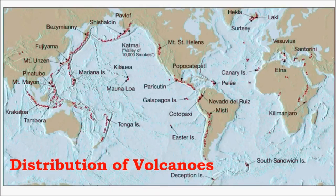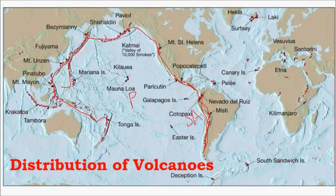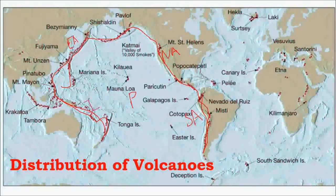Coming to the distribution of volcanoes, volcanoes are mainly distributed along a zone called the Pacific Ring of Fire. This is a region where the continental Pacific Oceanic Plate subducts below the South American Plate and the North American Plate, and in eastern countries like Japan it subducts below the Eurasian Plate.